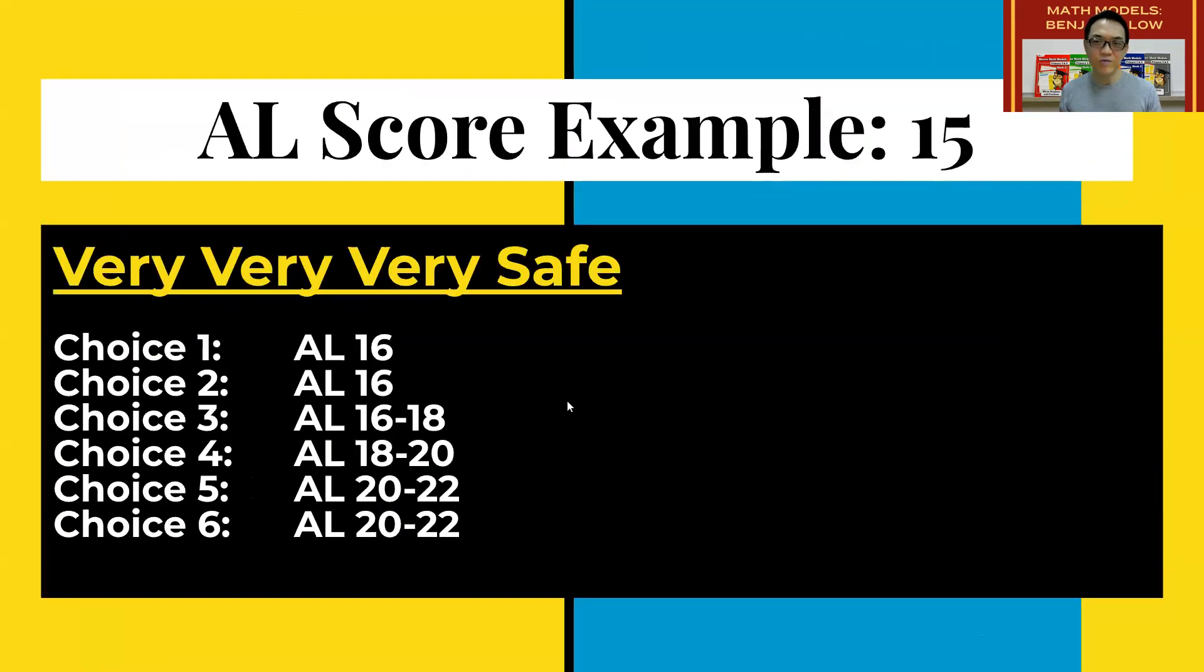And very, very safe will be, you know, you've got a 15 score. And so you put 16 for your AL choice one and two, 16 to 18 for choice number three. Then number four is higher than that. Number five and six are even higher than that. This will be extremely, extremely safe.